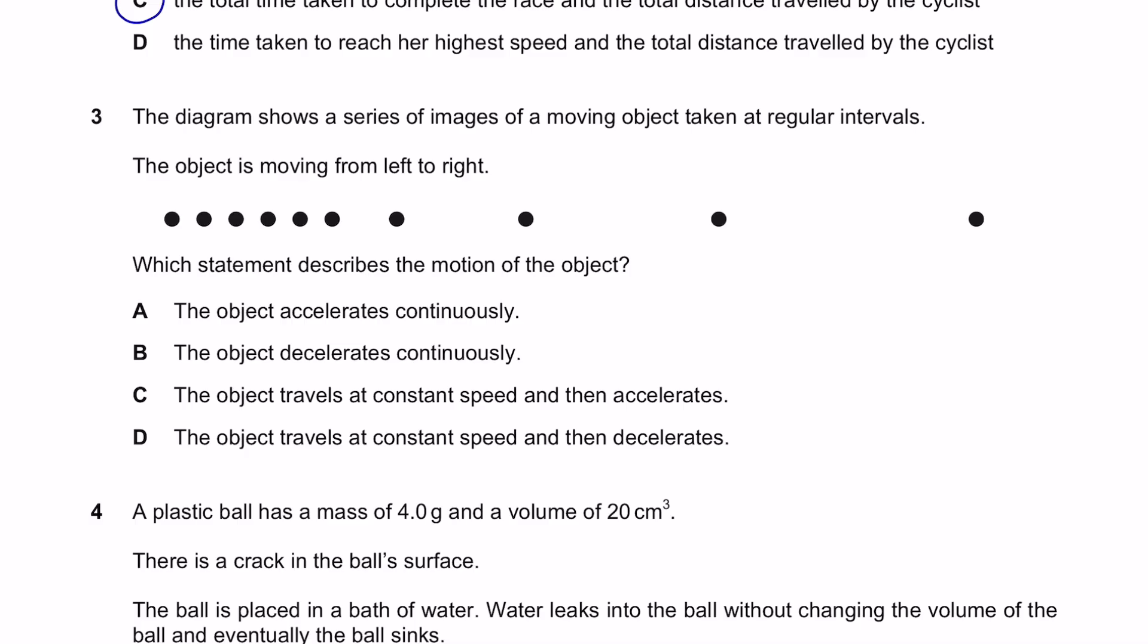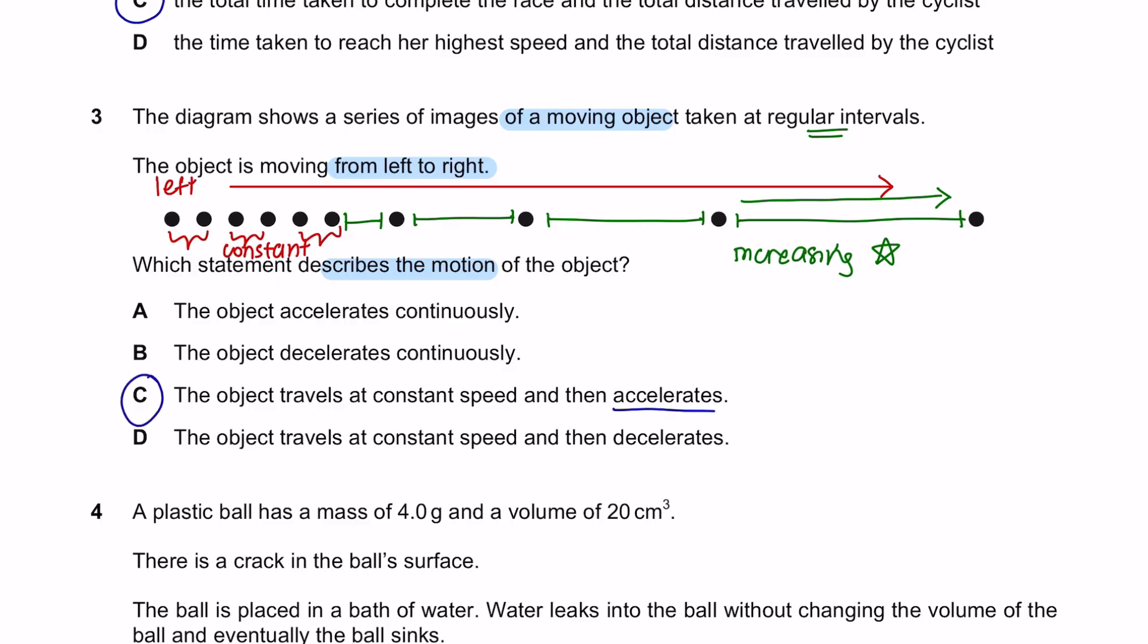Question 3. The diagram shows a series of images of a moving object taken at regular intervals. The object is moving from left to right. Which statement describes the motion of the object? We can see that the distance of each interval is the same, meaning that the motion must be at a constant speed. Whereas after a certain period of time, we can see that the intervals is increasing in distance. So this here shows that the object is accelerating. So the answer here is C. The object travels at constant speed and then it accelerates.